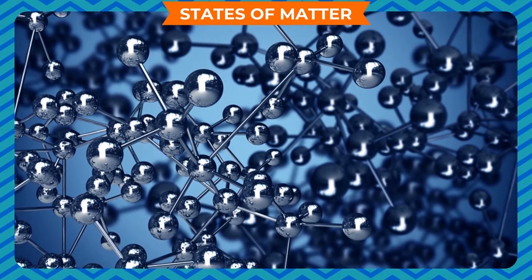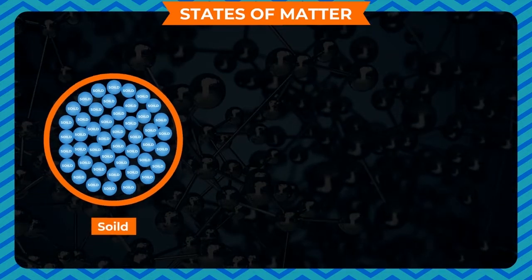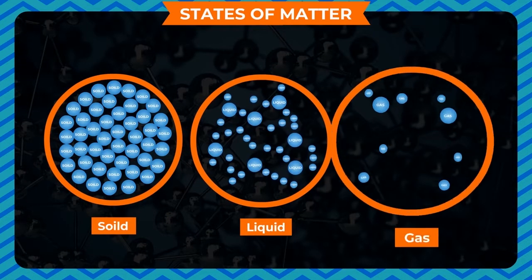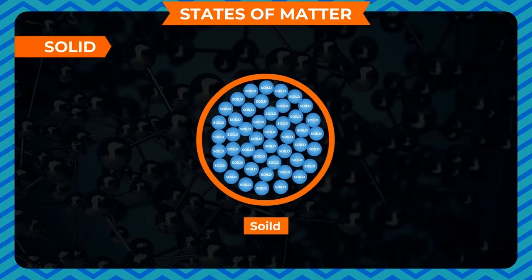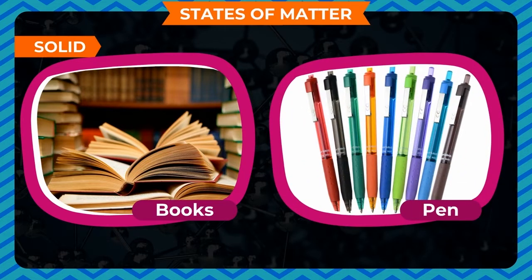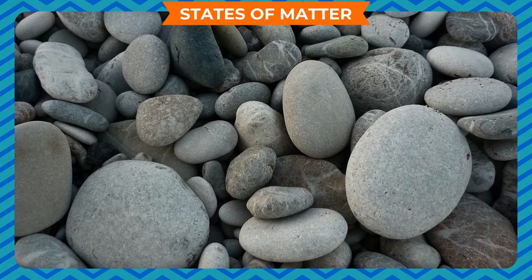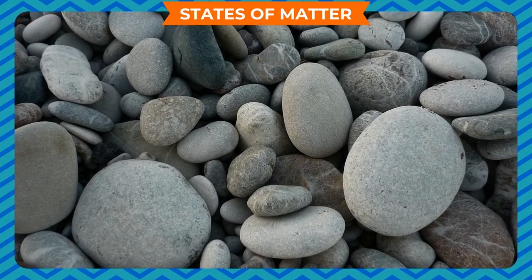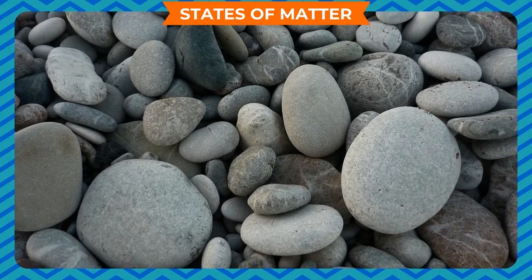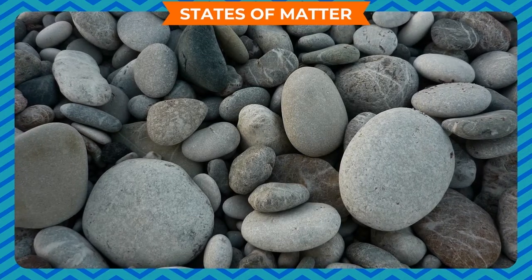The three states of matter are solid, liquid and gas. Touch a book, pen or a stone — all of them are hard. They are called solid objects. Solids are usually hard because their molecules are packed together very closely and tightly. A solid has a fixed volume and shape.